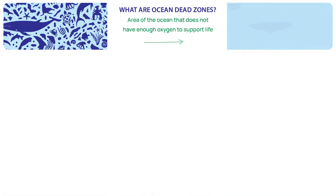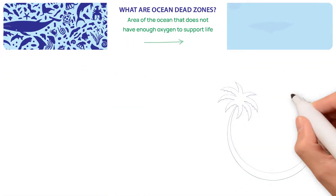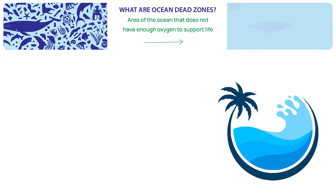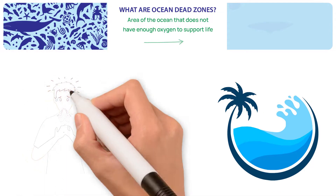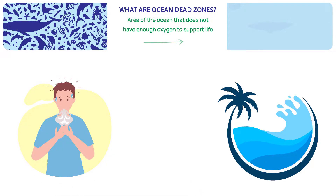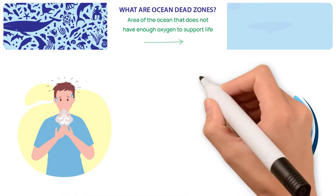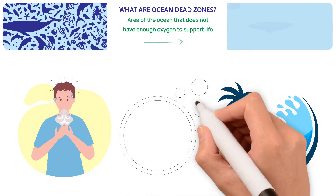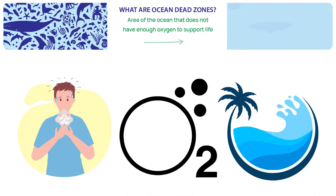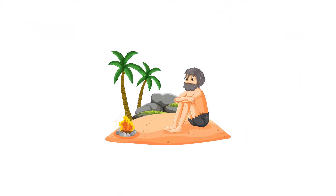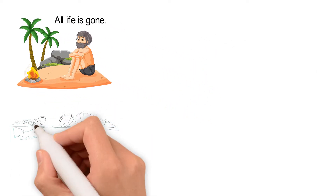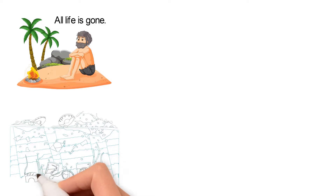What are ocean dead zones? An ocean dead zone is an area of the ocean that does not have enough oxygen to support life. Another word for an ocean dead zone is hypoxia. The ocean becomes hypoxic as oxygen levels fall below two milliliters of oxygen per liter of water. All marine life dies or leaves the area in a dead zone, and the area becomes deserted. Ocean dead zones can occur naturally, but often humans cause these dead zones.